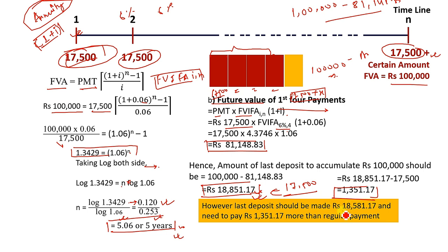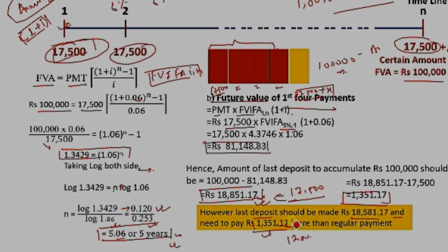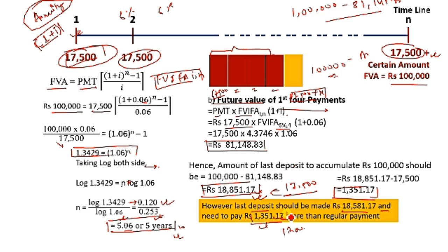The last year should be made 18,581.17 and we need to pay 1,351.17 more than the regular payment. In the last year, we will have 17,530 with additional charges. This is the value of 5 years: 1,351.17 and 5,720. The answer is 18,500 and we need to pay more: 1,351.71. Thank you for your time.